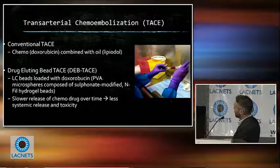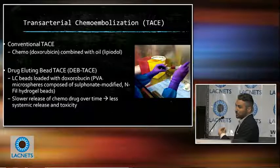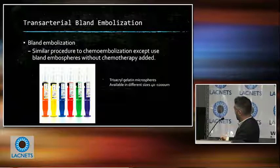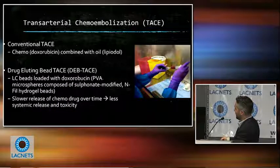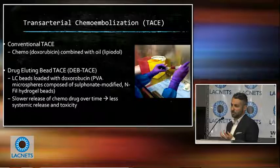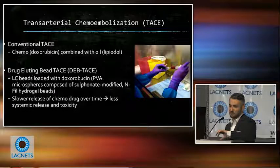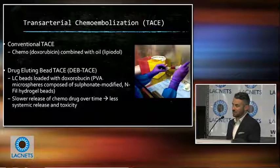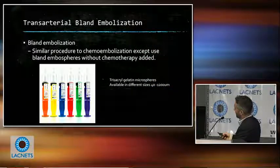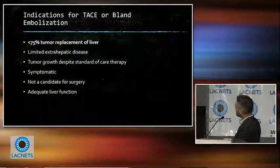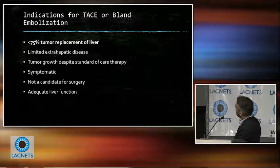There are two types of transarterial chemoembolization: conventional TACE, which is chemo mixed with oil, and drug-eluting beads impregnated with chemotherapy. The drug-eluting beads release chemo over time, providing a buildup into the tumor over a couple of weeks with less systemic release and less systemic toxicity. There are some drawbacks I'll explain. Bland embolization simply blocks the artery — we usually use something called embospheres.